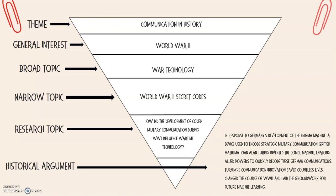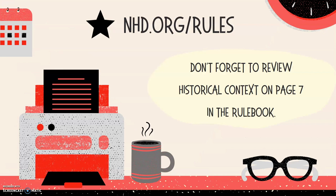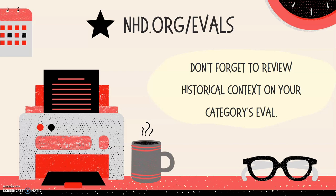It seems like not only are we using the cone to whittle down to that research question and historical argument, but we also have to think about going back up that cone — thinking about all the different things we need to build on when it comes to sources we have to review. We have to know when, where, and why World War II, but also keep thinking about technology: what happened during World War I? How are we building off what happens in the interwar years and getting to the tech that happens during World War II? Don't forget to review historical context in our rulebook — you'll find this information on page 7. You can download the rulebook at nhd.org/rules and also review historical context on your categories evaluation sheet at nhd.org/evals.